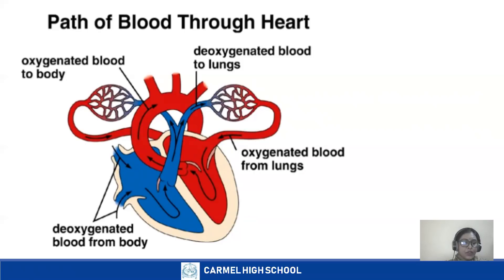Similarly, from the lower part through the inferior vena cava, deoxygenated blood enters the right atria. The valve between the right atria and right ventricle is known as the tricuspid valve. Due to the contraction of the muscles of the right atria, blood is forced into the right ventricle. This is the right part of the heart which carries deoxygenated blood. Blood is then forced into the pulmonary artery, which bifurcates on either side and reaches the lungs carrying impure blood.